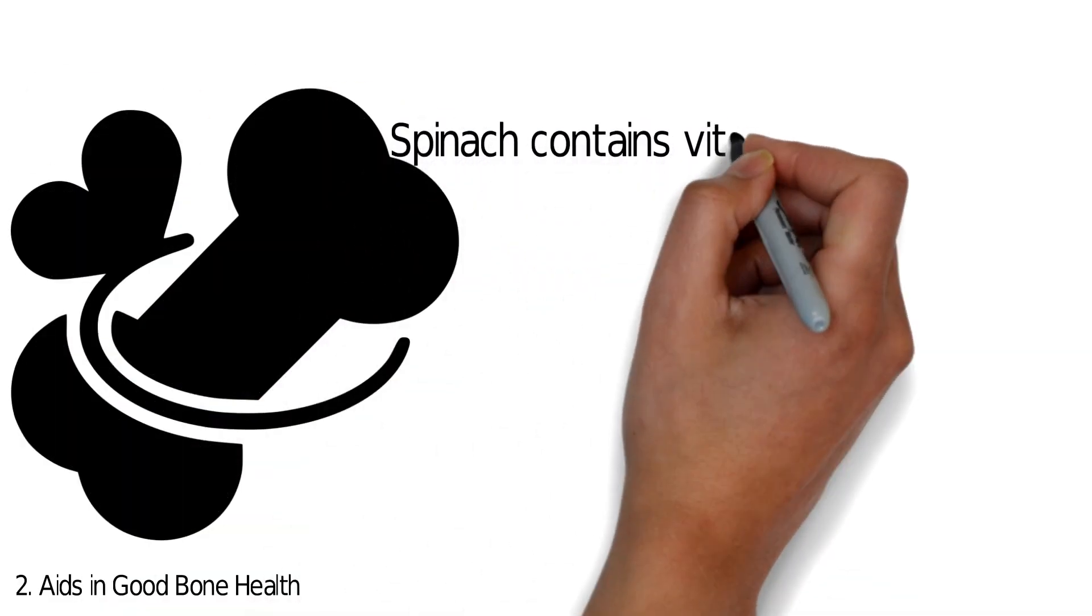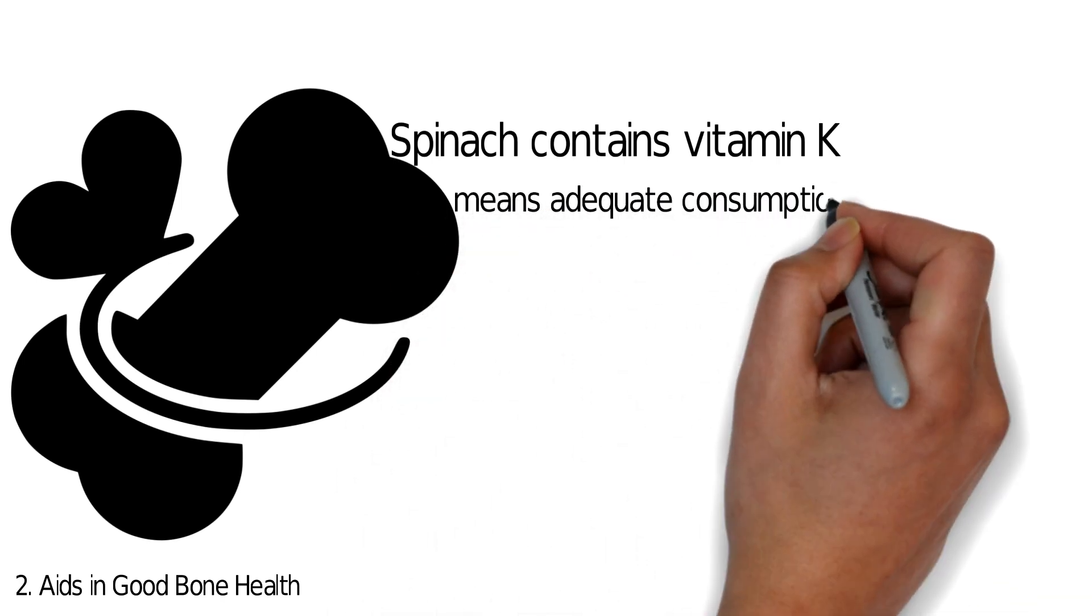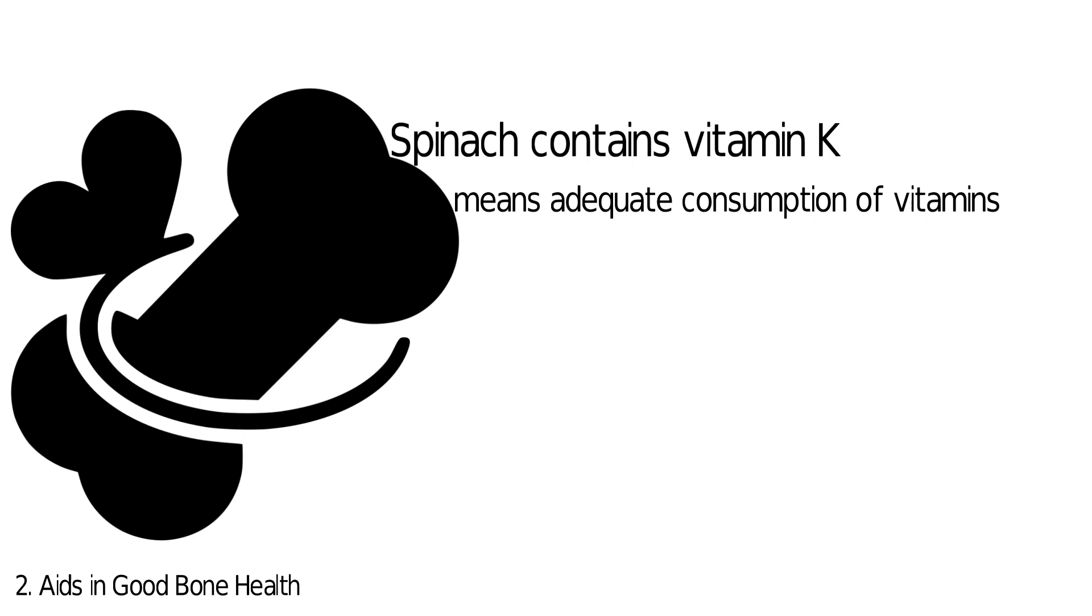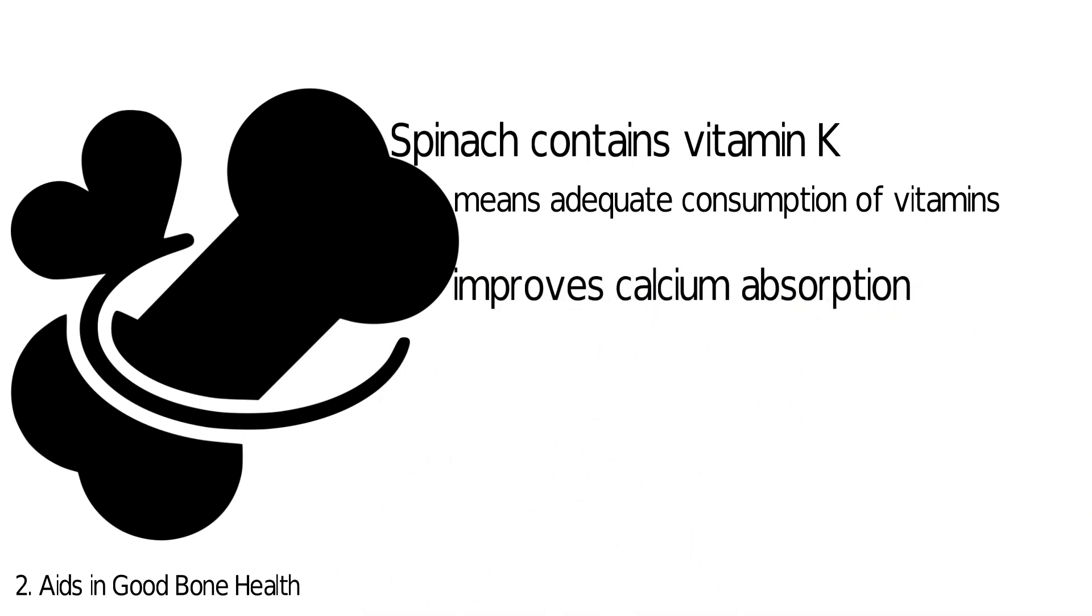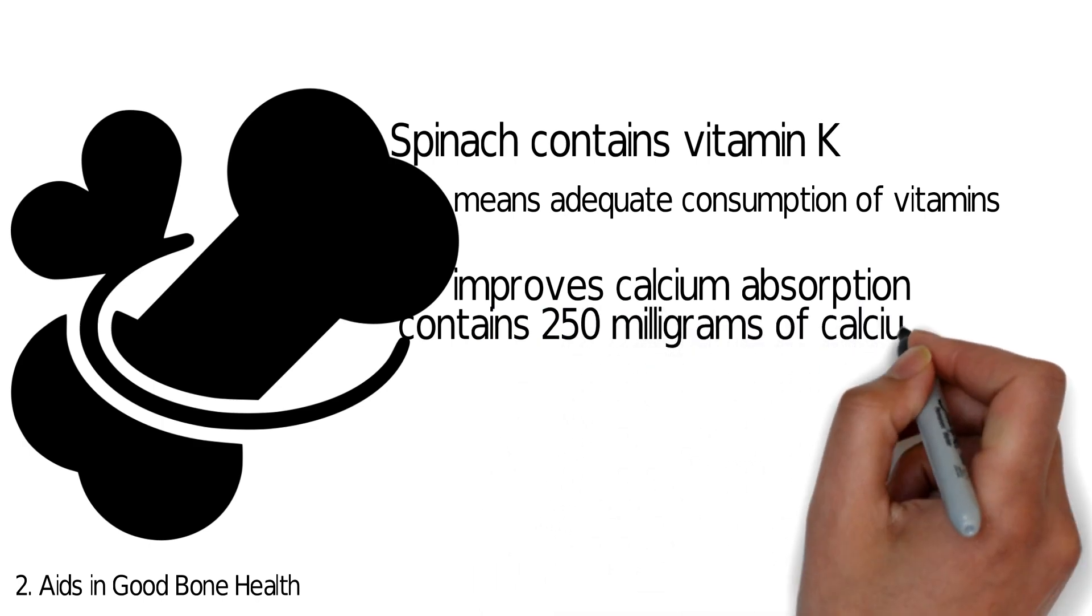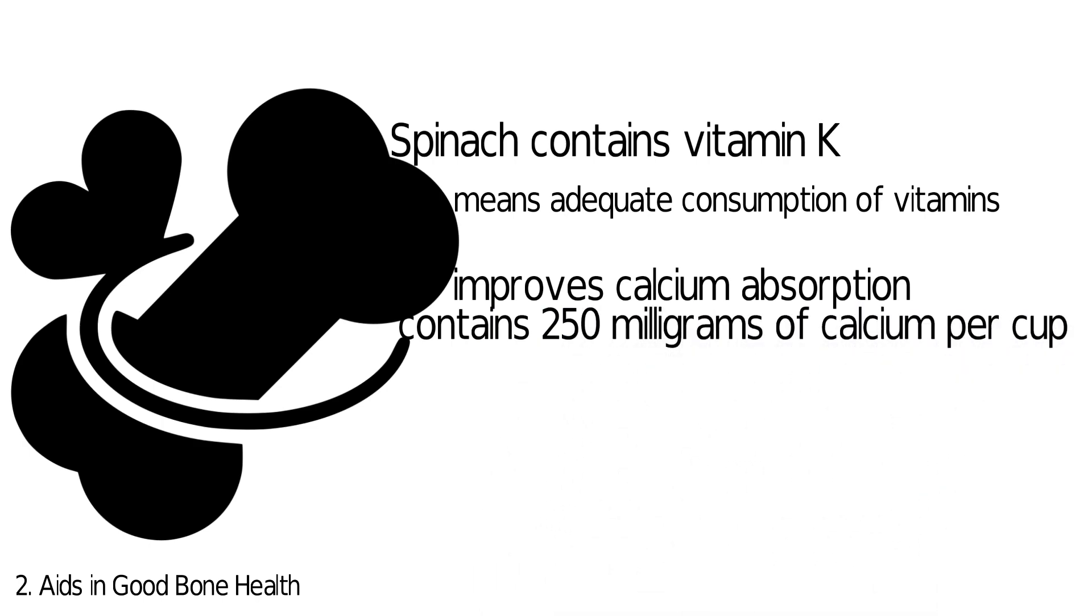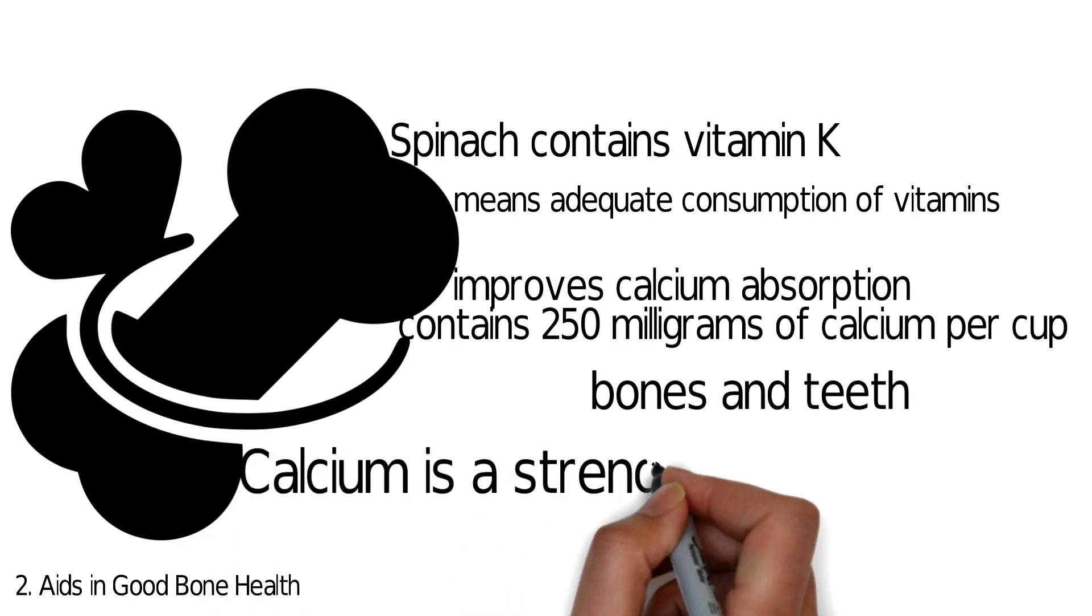The second one: aids in good bone health. Spinach contains vitamin K that aids in good bone health, and this means adequate consumption of vitamins can do good to your health and also improve calcium absorption by your body. Spinach contains 250 milligrams of calcium per cup and it is much required by your bones and teeth. Calcium is a strengthening agent for your bones and keeps our bones healthy.